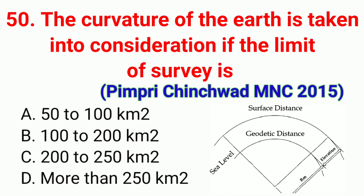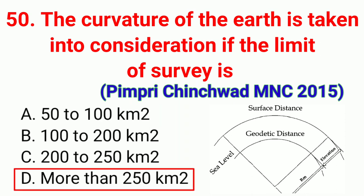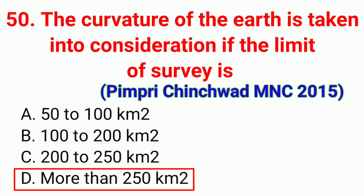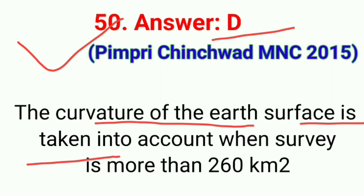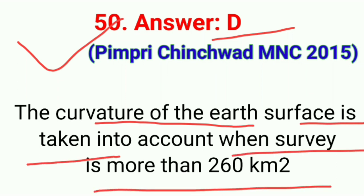Question number fifty: The curvature of the earth is taken into consideration when the limit of survey is. The correct answer is option D, more than 250 km². The curvature of the earth's surface is taken into account when the survey area is more than 260 km².